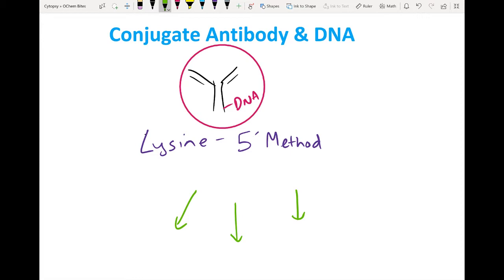So today we're going to be conjugating the lysines of the heavy and light chains of antibodies with the five prime end of oligos. The lightning link kit is available from Abcam and a link is in the description.